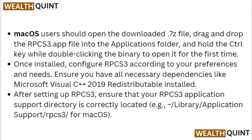Mac OS users should open the downloaded .7z file, drag and drop the RPCS3.app file into the Applications folder, and hold the Ctrl key while double-clicking the binary to open it for the first time. Once installed, configure RPCS3 according to your preference and needs. Ensure you have all the necessary dependencies like Microsoft Visual C++ 2019 Redistributable installed, and verify that your RPCS3 application support directory is in the correct location.